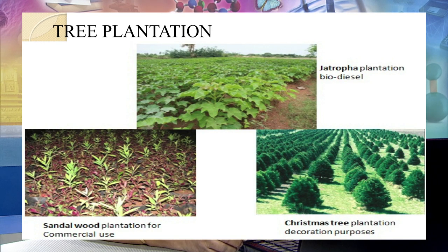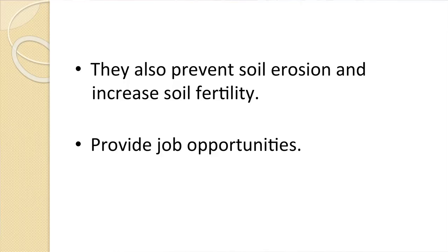The pictures show three types of plantation: the first on top is Jatropha; the left-hand corner is sandalwood; and the right-hand side shows Christmas trees for commercial purposes. There is also a Casuarina plantation shown as windbreakers. All these plantations help in preventing soil erosion, increase soil fertility, and of course provide job opportunities.